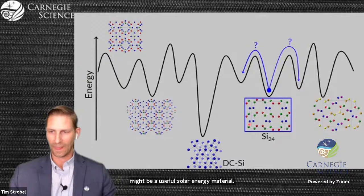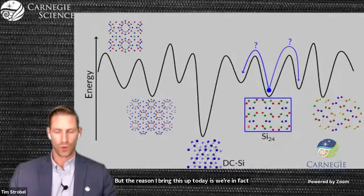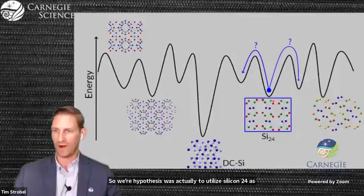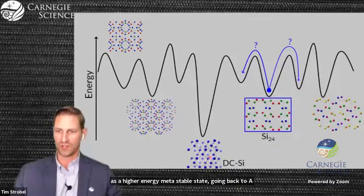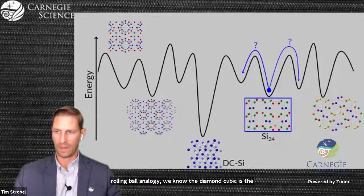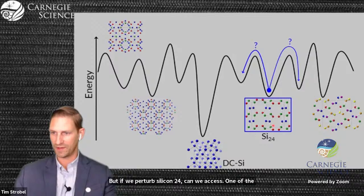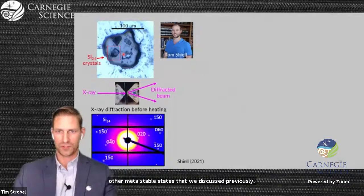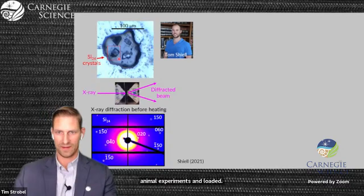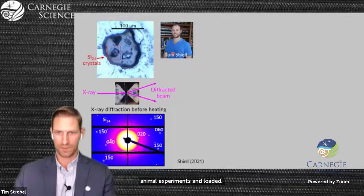But the reason I bring this up today is we're going to think of this as a metastable precursor phase. Our hypothesis was to utilize silicon-24 as a higher energy metastable state. If we perturb silicon-24, can we access one of the other metastable states that we discussed previously? So to do this, we set off to do high-pressure diamond anvil experiments. This is very recent work that was published this year by Tom Scheel.